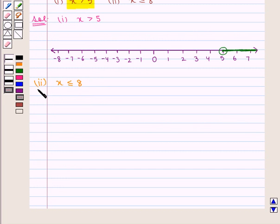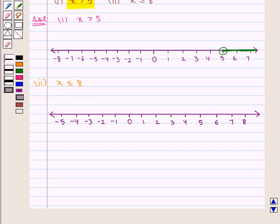The second part is x is less than or equal to 8. For this we again draw a number line in which positive integers are marked to the right of 0 and negative integers are marked to the left of 0.